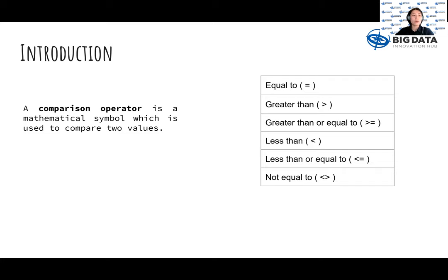A comparison operator is a mathematical symbol which is used to compare two values. They include equal to, greater than, greater than or equal to, less than, less than or equal to, and not equal to.